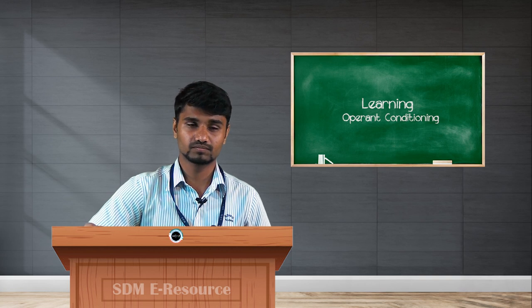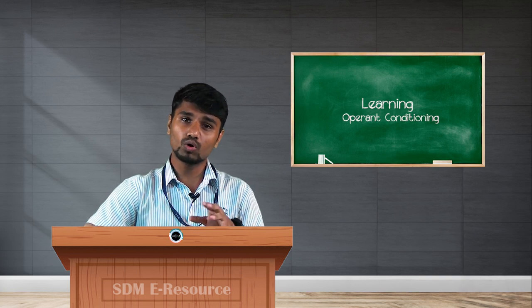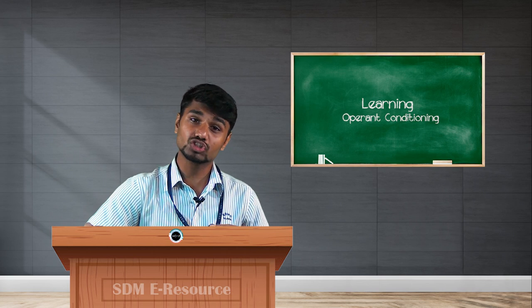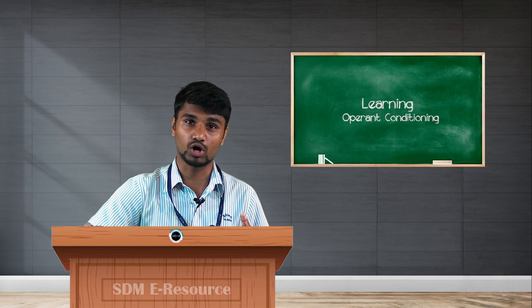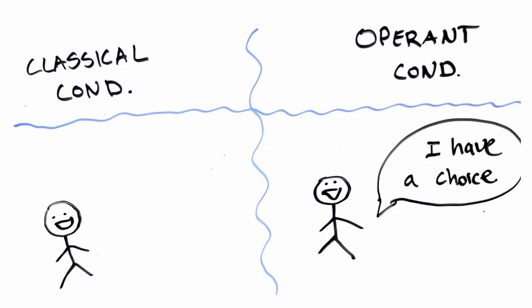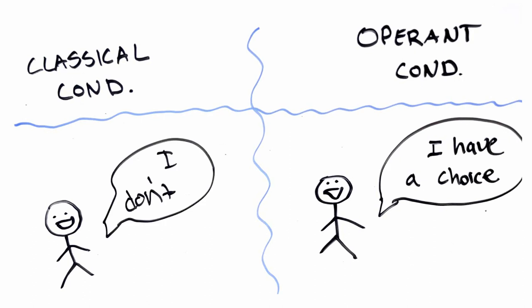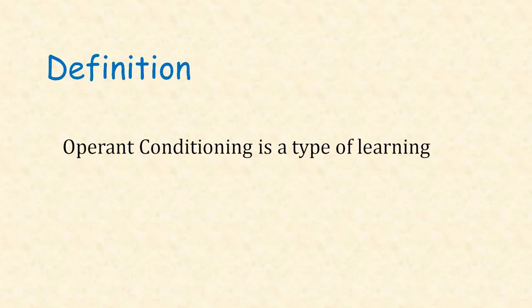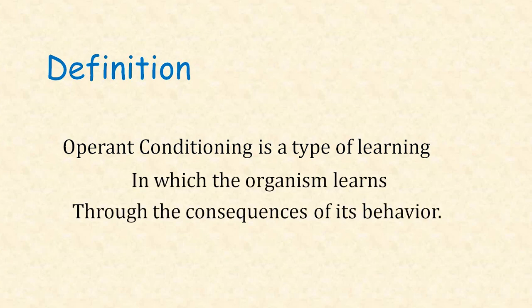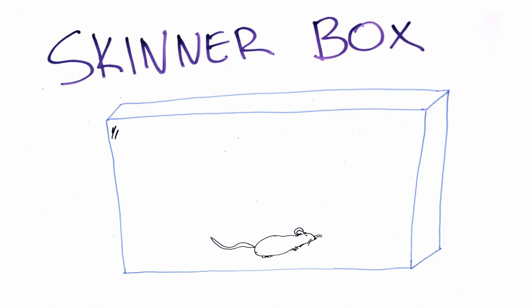For those of you who already know what classical conditioning is, operant conditioning is a bit different. When it comes to operant conditioning, the person has a choice to change their behavior accordingly, whereas in classical conditioning it's inevitable — the person does not have a choice to alter their behavior. Operant conditioning can be defined as any type of learning in which the organism learns through the consequences of its own behavior.